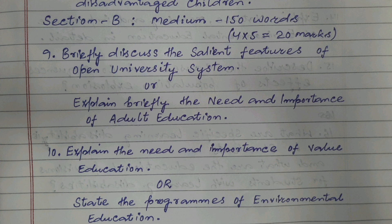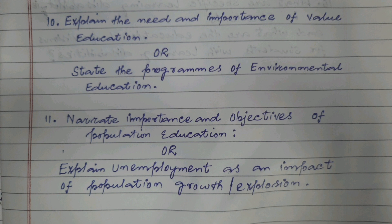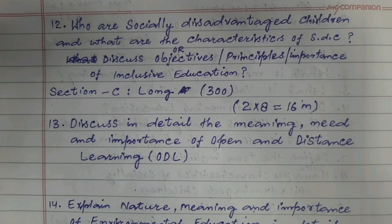Section B — Medium Answer Type Questions, to be answered in about 150 words. 4 × 5 = 20 marks. Question 9: Briefly discuss the salient features of open university system, or explain briefly the need and importance of adult education. Question 10: Explain the need and importance of value education, or state the programs of environmental education. Question 11: Narrate the importance and objectives of population education, or explain unemployment as an impact of population growth. Question 12: Who are socially disadvantaged children and what are their characteristics, or discuss the objectives, principles, or importance of inclusive education.